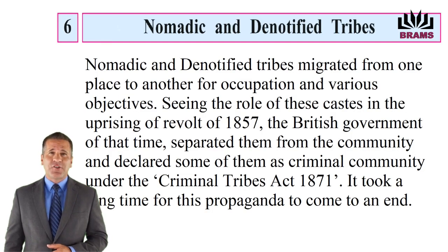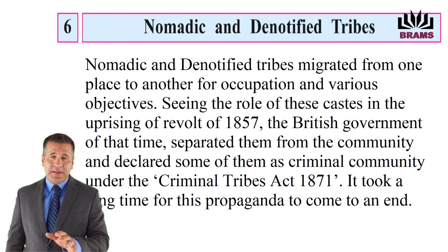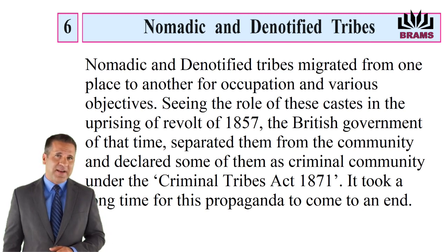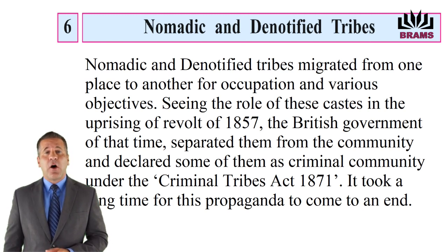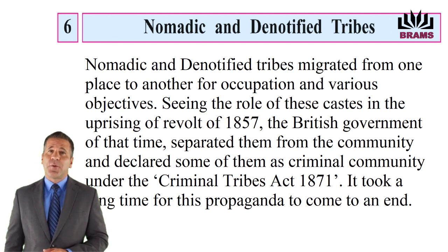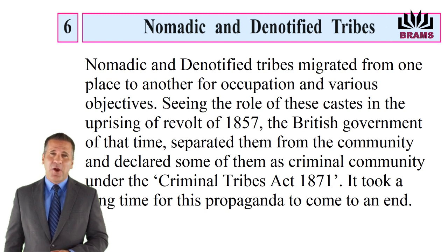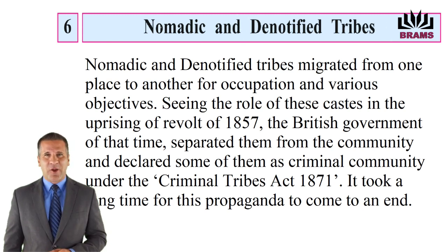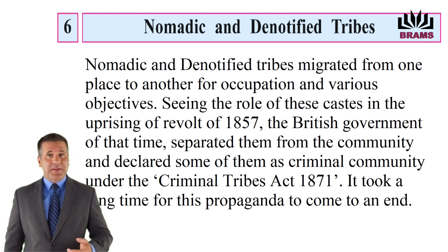Nomadic and denotified tribes migrated from one place to another for occupation and various objectives. Seeing the role of these castes in the uprising of the revolt of 1857, the British government of that time separated them from the community and declared some of them as criminal community under the Criminal Tribes Act 1871. It took a long time for this propaganda to come to an end.